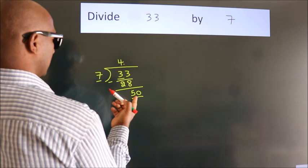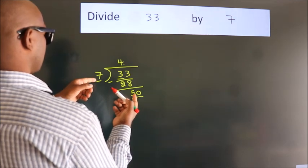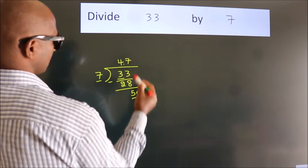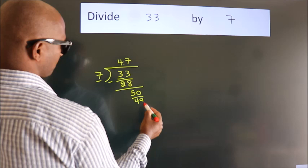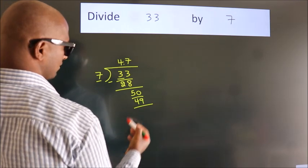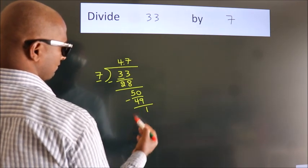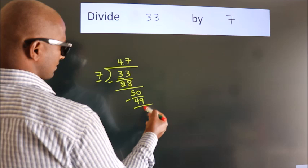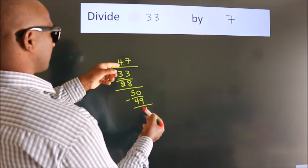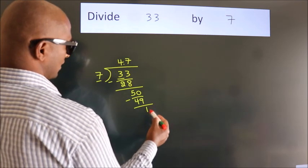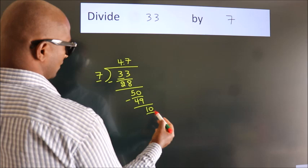A number close to 50 in the 7 table is 7 sevens, 49. Now we subtract. We get 1. After this, we already have the decimal, so directly take 0. So 10.